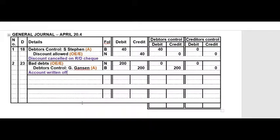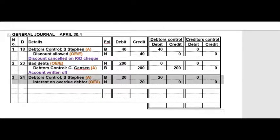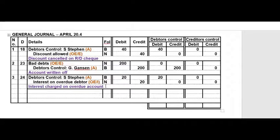On the 24th we charged A. Steven 20 rand interest on his overdue account — also a General Journal transaction. The account debited is A. Steven's account because he now owes us more money; the account credited is an income account called Interest on Overdue Debtors. Narration: 'interest charged on overdue account.' We didn't have a rate or time period given, so that's fine.